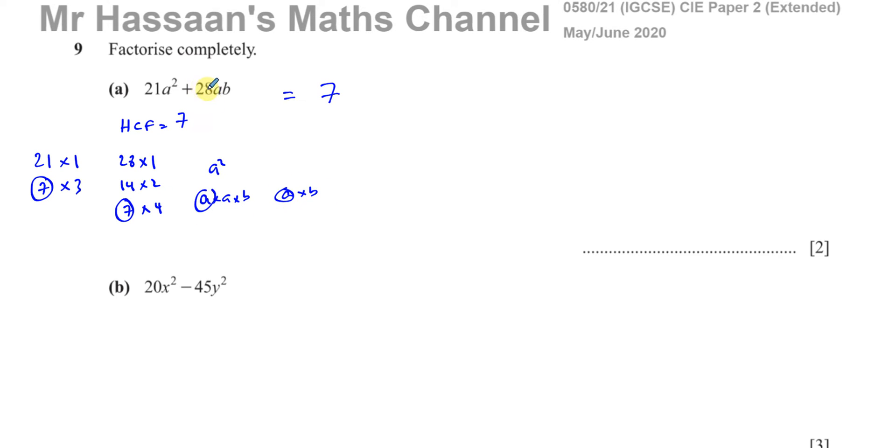So when you have the same letter in both terms, you choose the one with the lower power as the highest common factor, because that's what's common. The b is not common.